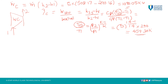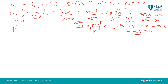Now that we have the isentropic temperature T2s = 459.30 K, it is easy to substitute into the efficiency formula. The isentropic efficiency of the compressor is (459.30 minus 290) divided by (505 minus 290), which gives us 78.74 percent. So we have found the compression work and the isentropic efficiency of the compressor.